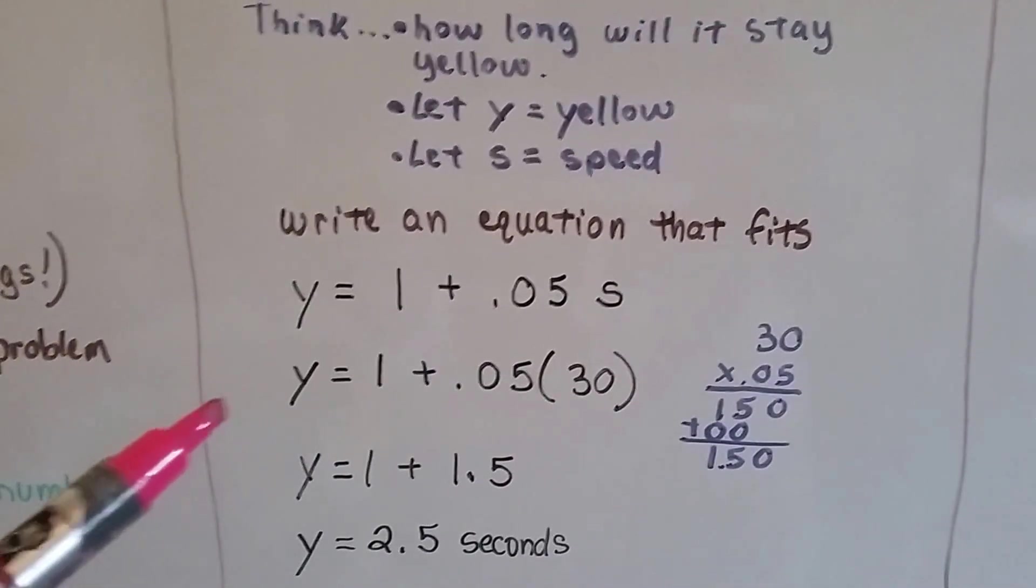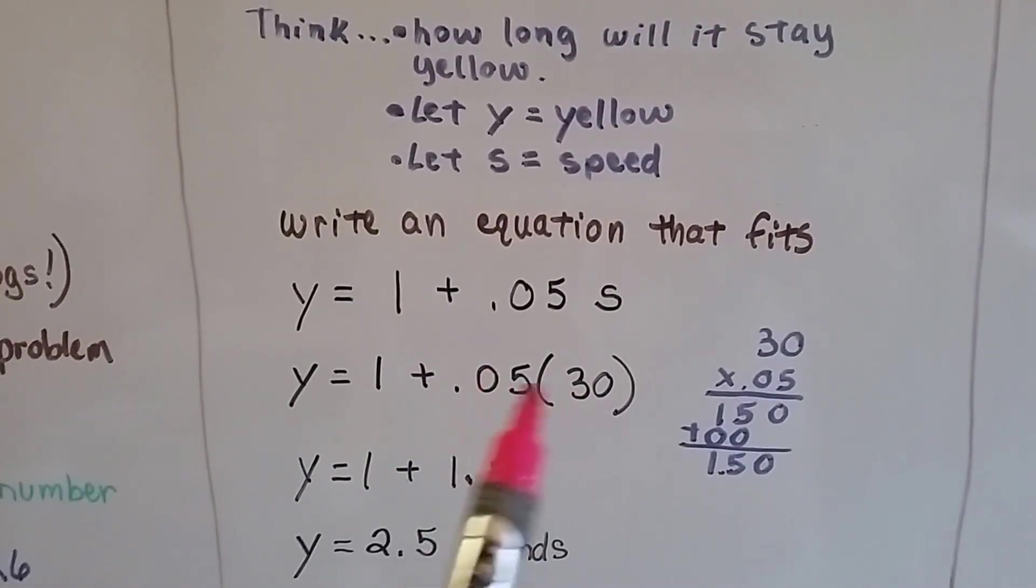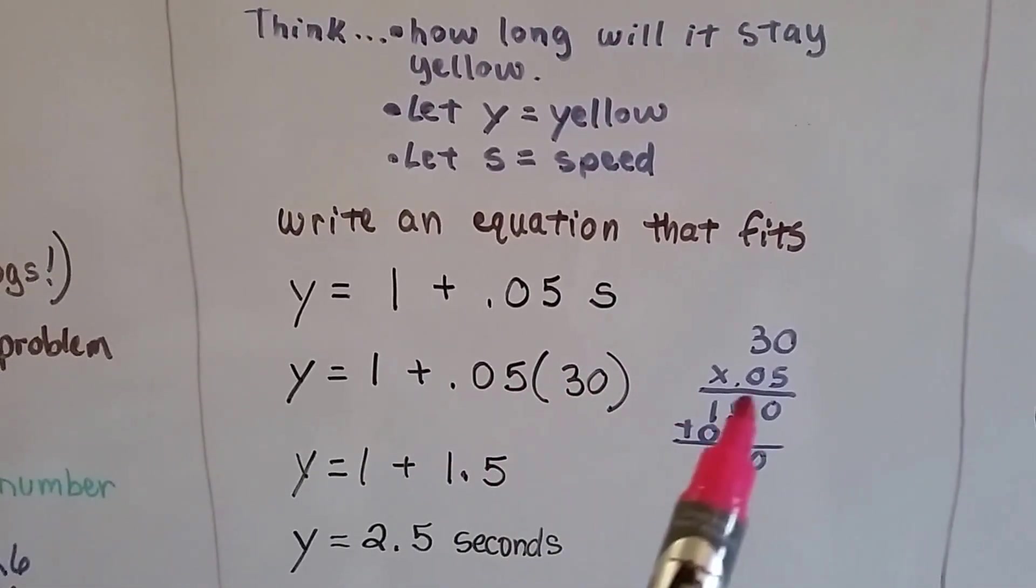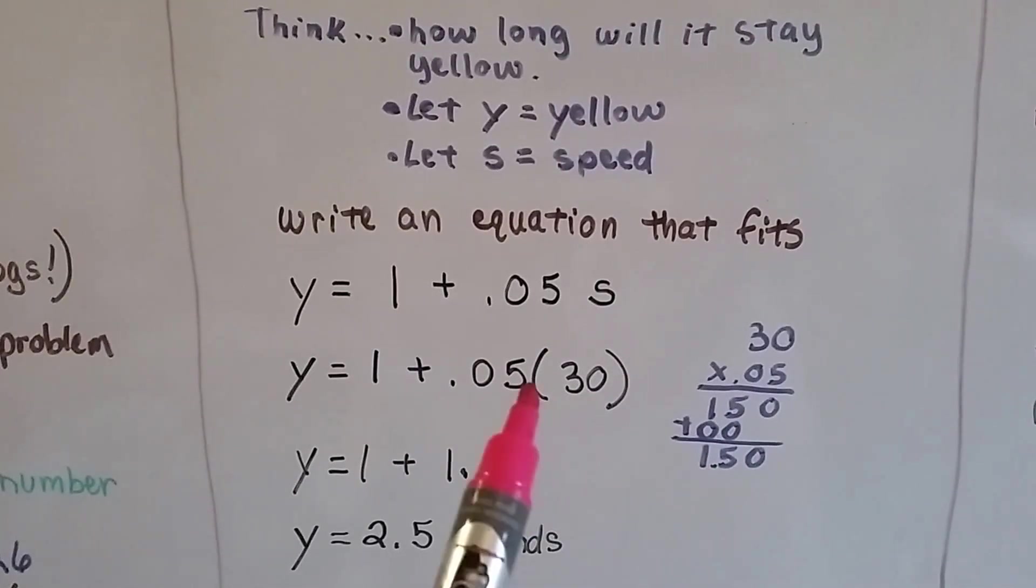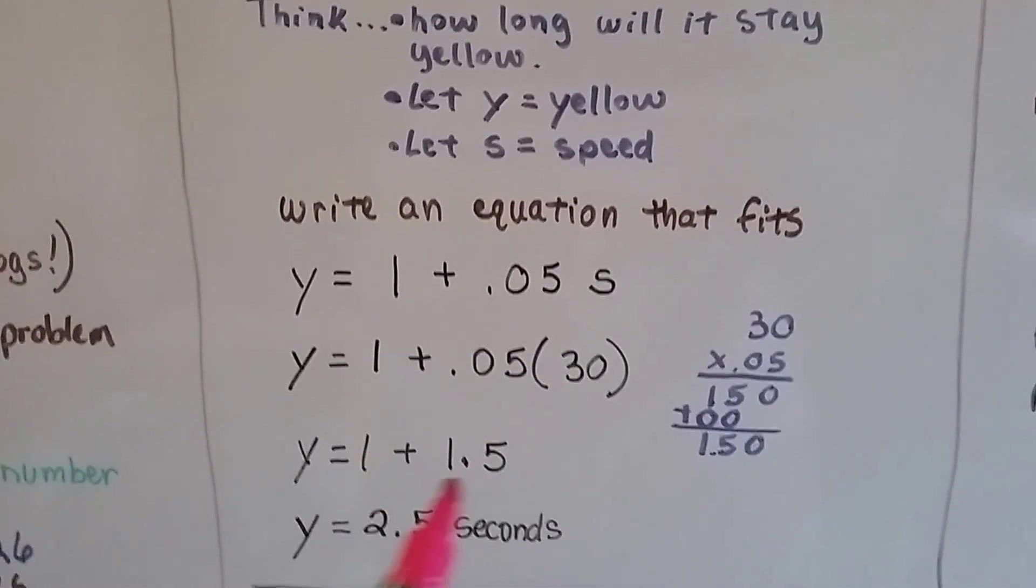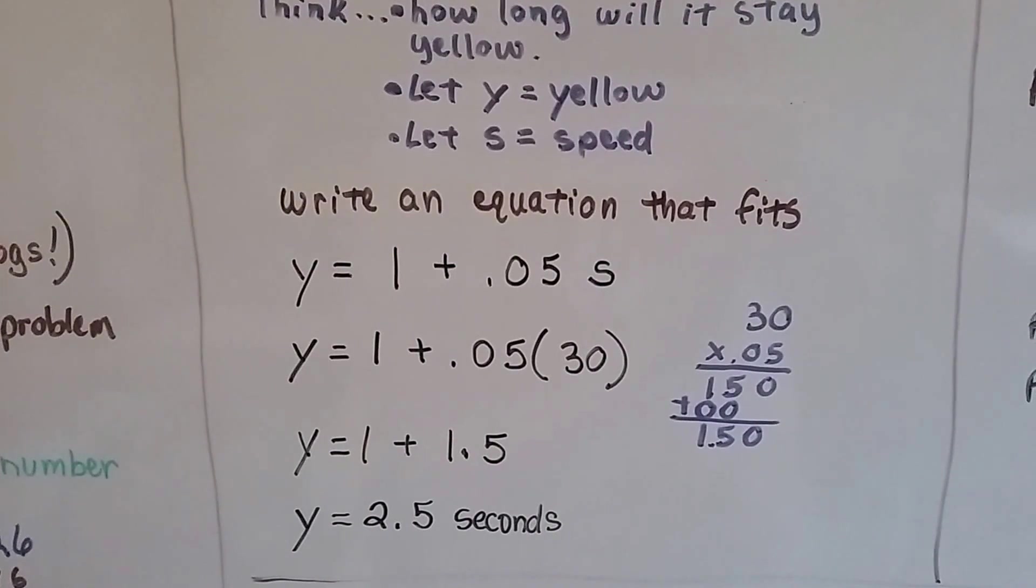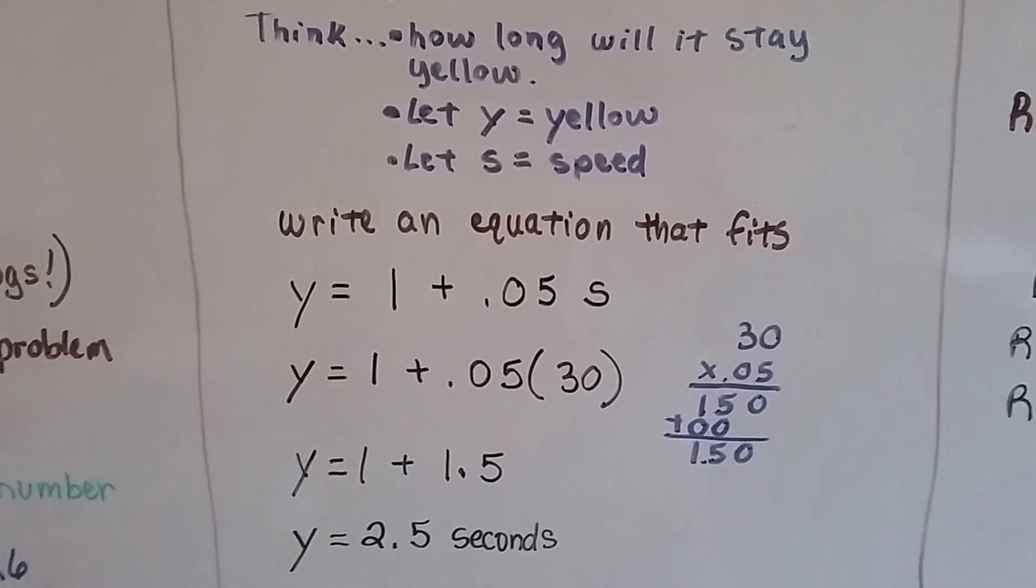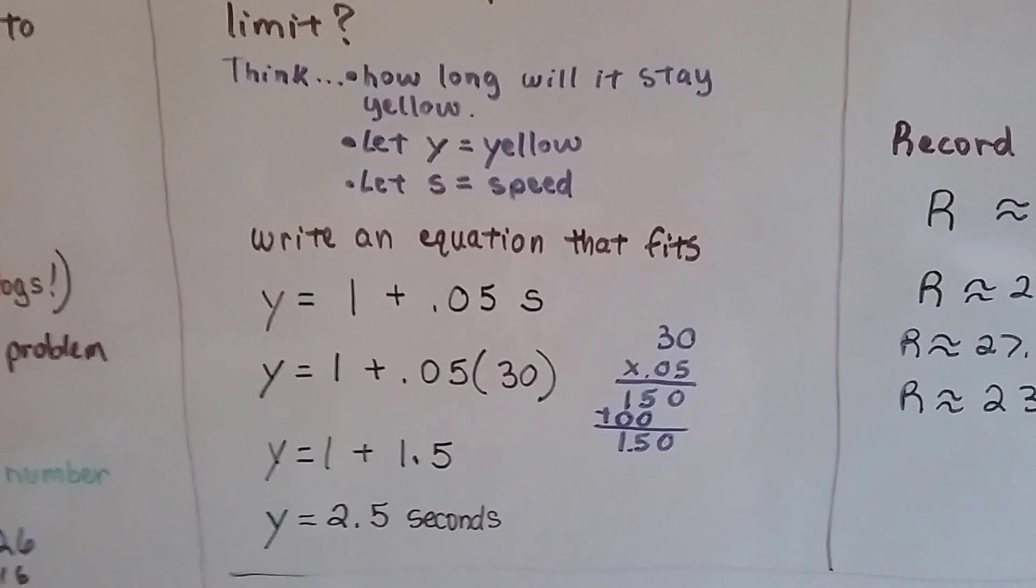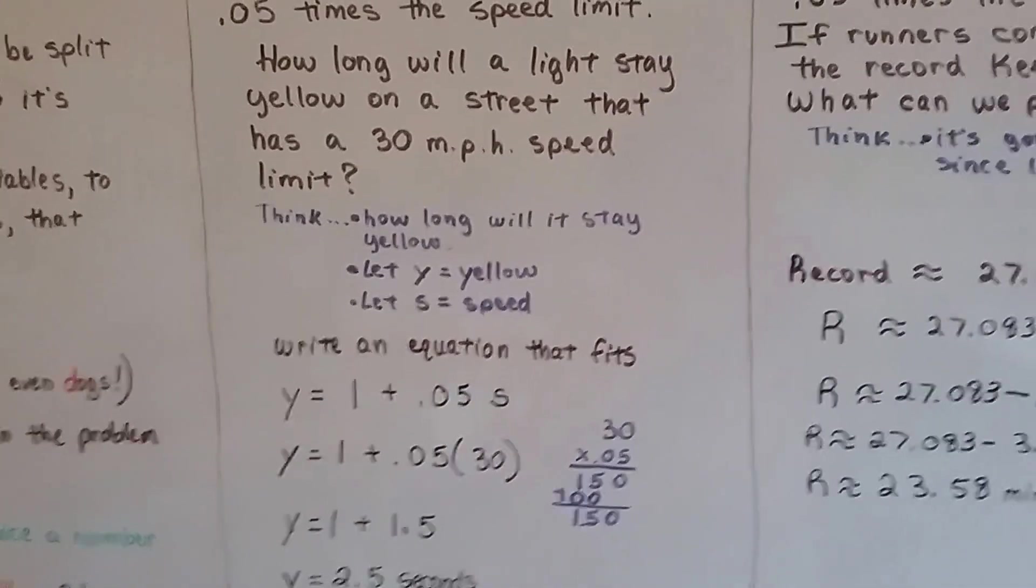If it's 30 miles an hour for the speed, we need to multiply 30 times the .05 and we get 1.5. We add that to the 1 more, and we know the yellow light will be 2.5 seconds long on a 30 mile an hour street.